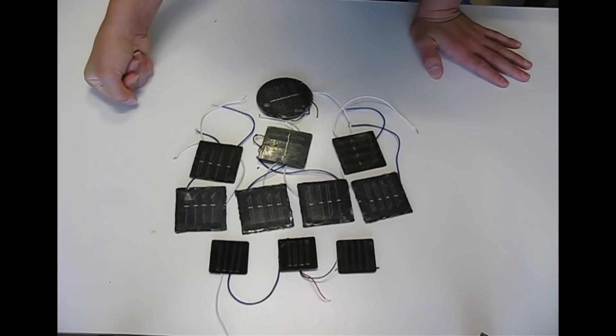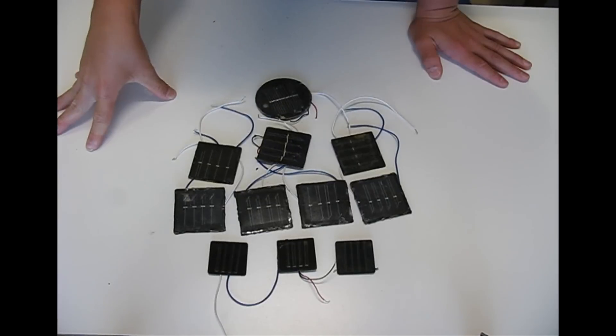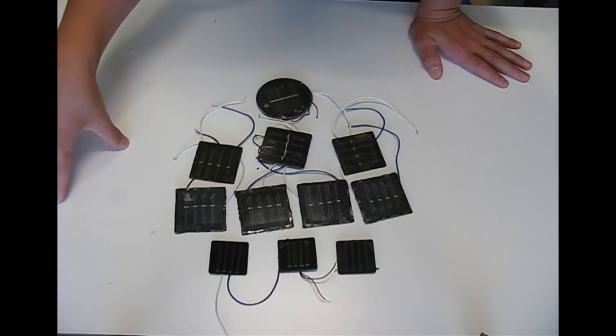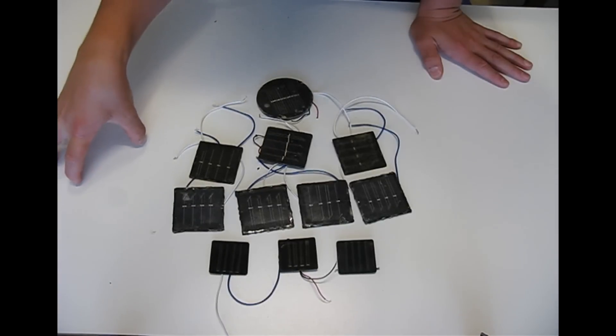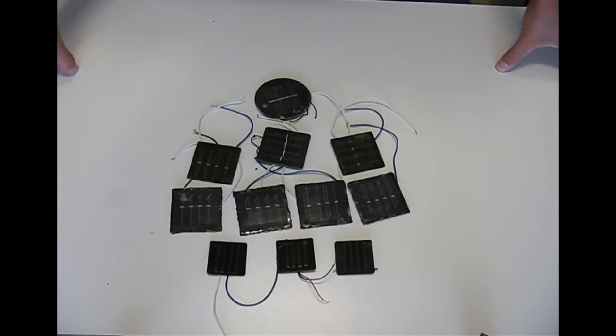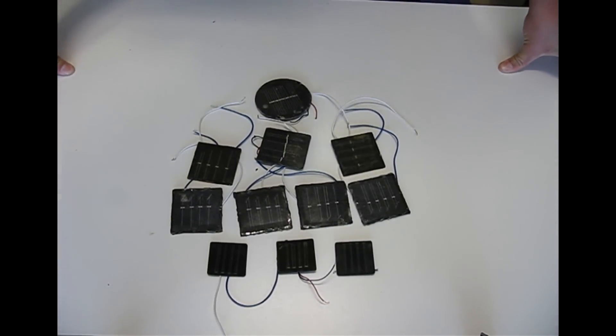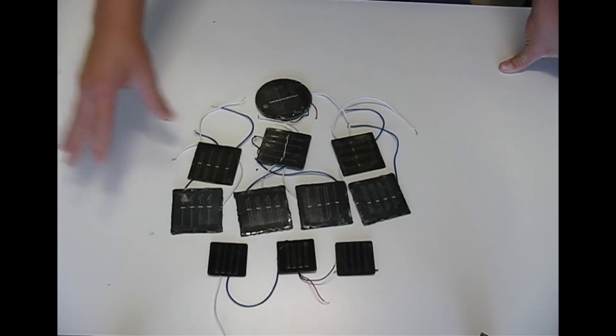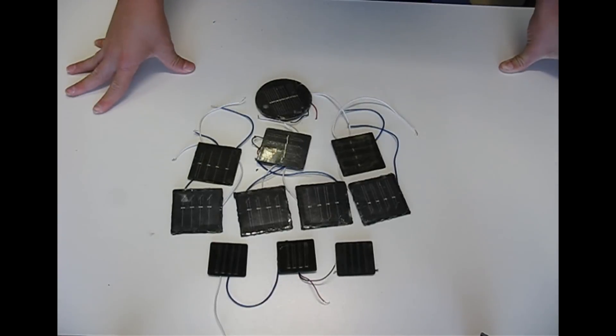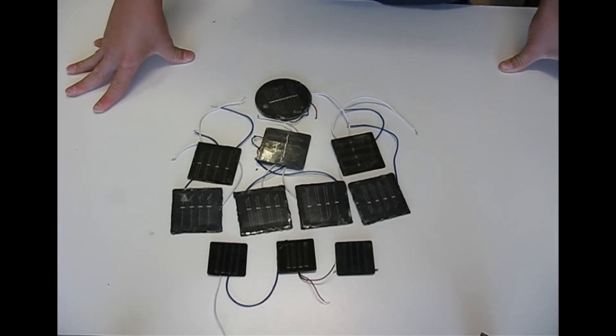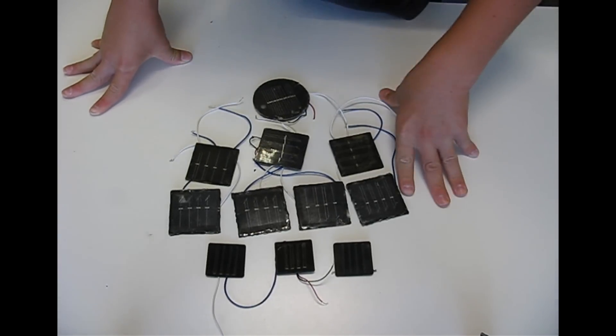When you add that all up, you only need 6 of these cells to generate the 12 volts you need. Plus the open circuit voltage for charging a battery, you might need maybe 8 or 9 of these. But when you take it into consideration, it would definitely be possible to create a solar panel out of these.